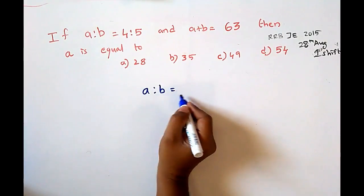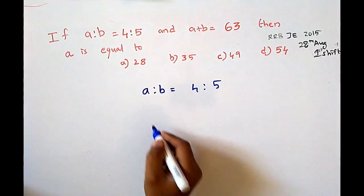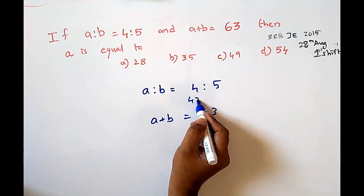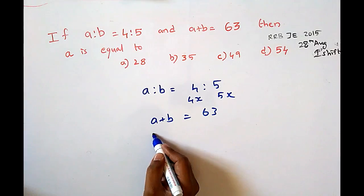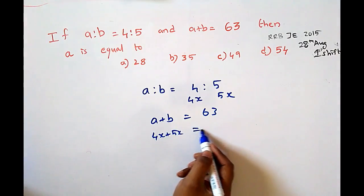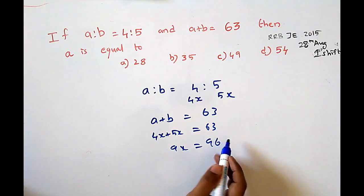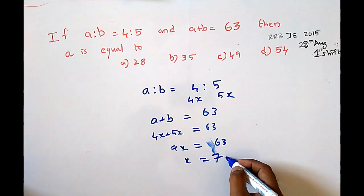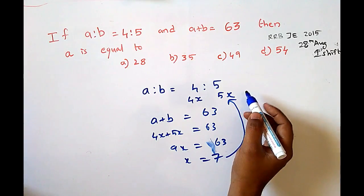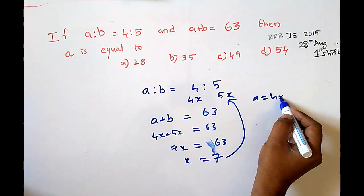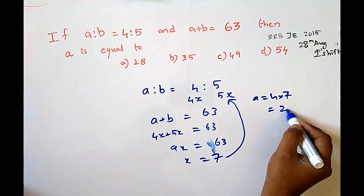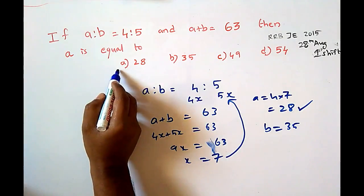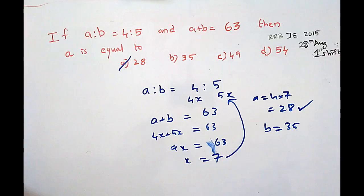If A to B equals 4 is to 5 and A plus B equals 63, find A. We consider A = 4x and B = 5x. Substituting: 4x + 5x = 63, so 9x = 63, giving x = 7. Therefore A = 4 × 7 = 28, and B = 5 × 7 = 35. The answer for A is 28.